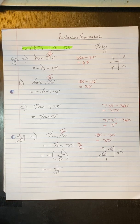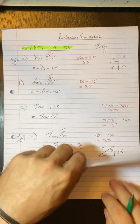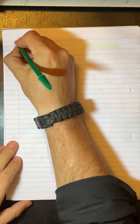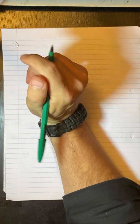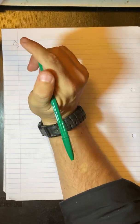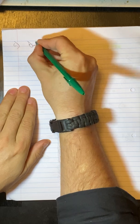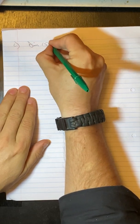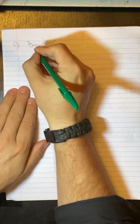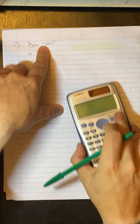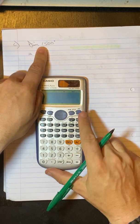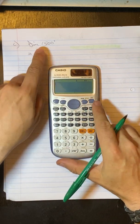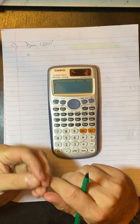All right. Moving on to the next example. Again, the question is without using a calculator, evaluate the following. So we've got sine 1,500. And as you can see, that is way more than 360. So I'm not going to do what I did on the side with the previous one. I'm just going to do it on the calculator until I get an angle between 0 and 360.